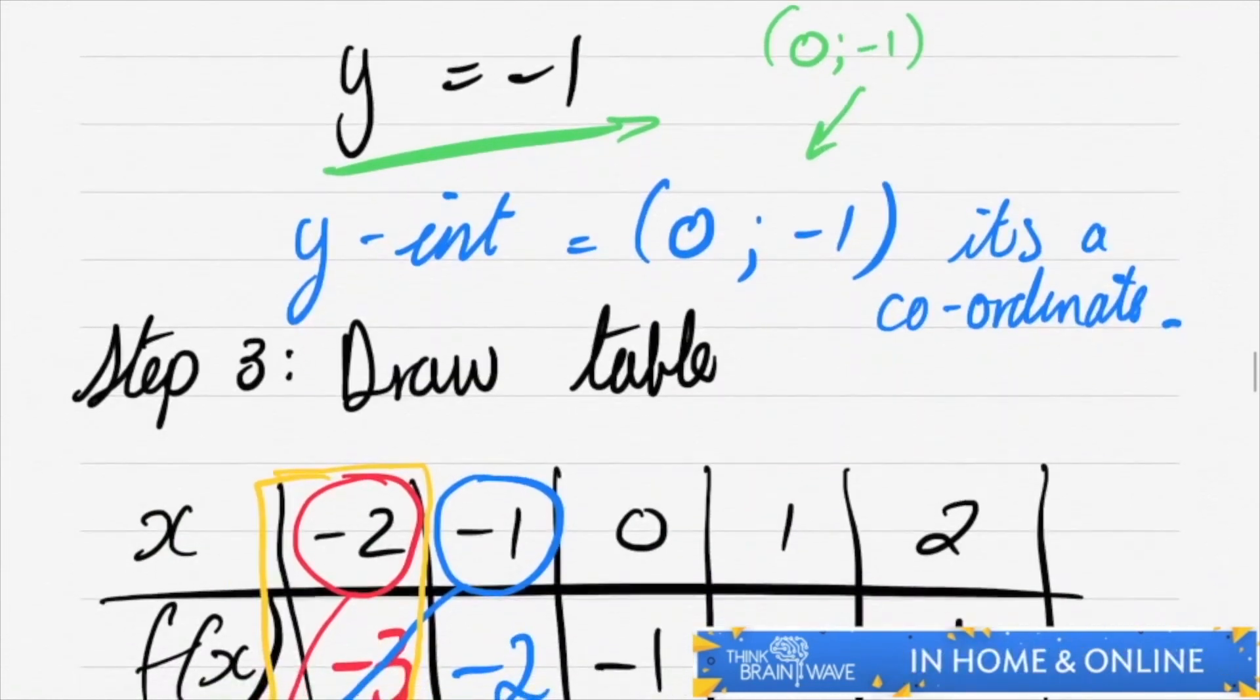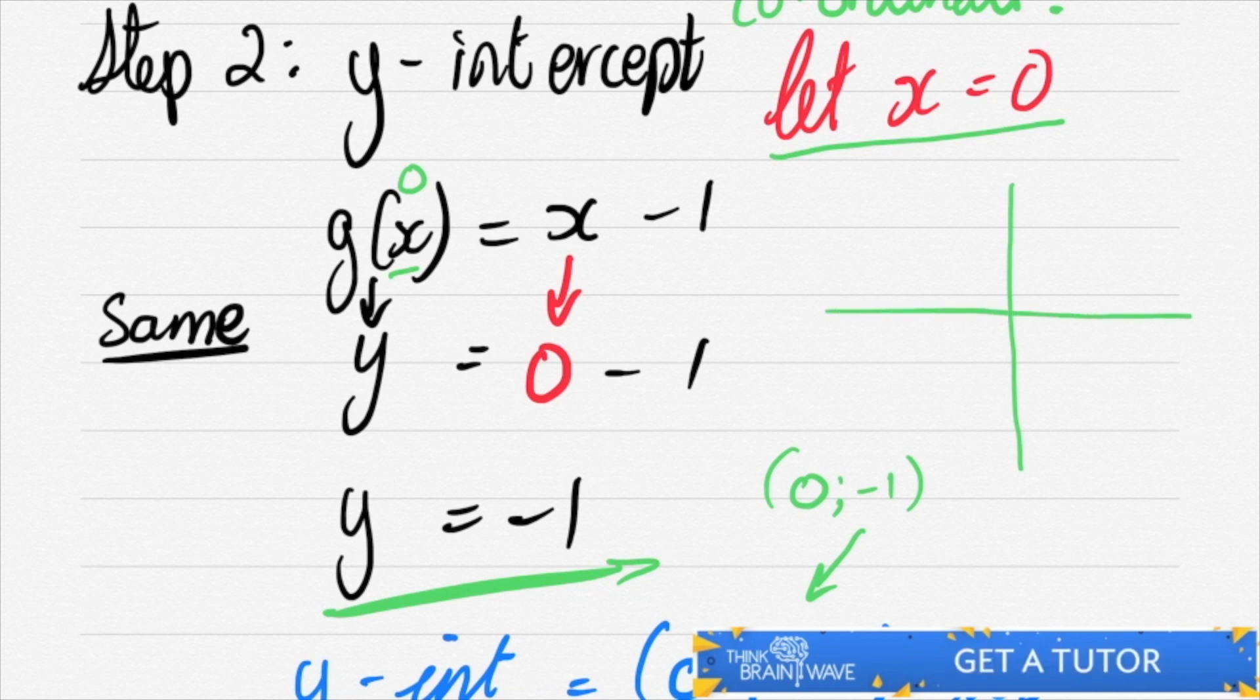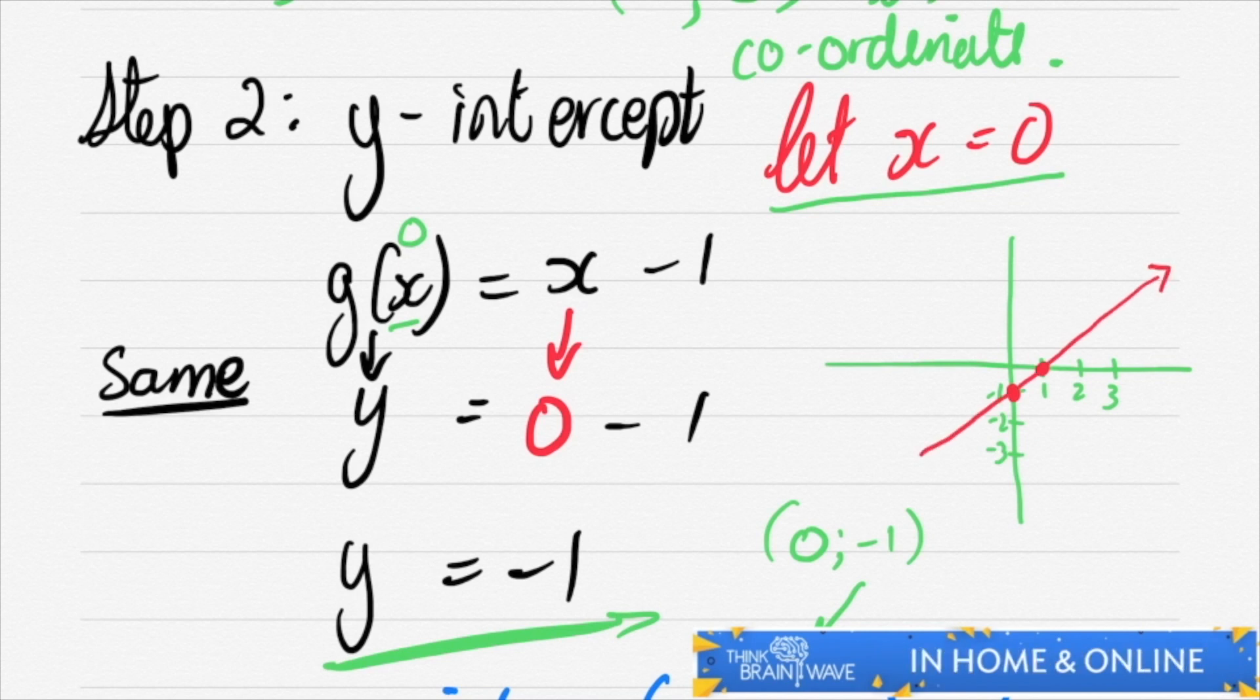So now let's draw the table. If you have the x-intercept and the y-intercept, you can actually plot straight away. You could plot this graph. You could say (0, -1), so let's say -1, -2, -3. And this would be 0. It's the other point which is (1, 0). So we'll go 1, 2, 3. That would mean your next point would be here. You could actually just connect them straight together like this with a straight line.